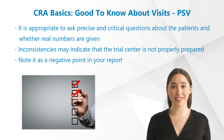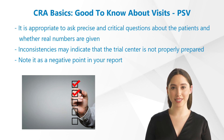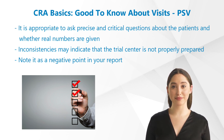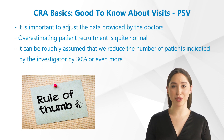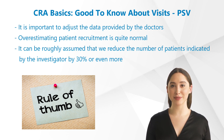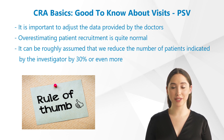If you discover inconsistencies in the statements about the number of patients, this may indicate that the trial center did not properly deal with the questionnaire and the study documents. If this is the case, it is important to adjust the data provided by the doctors, in most cases by a correction factor, because overestimating patient recruitment is quite normal. This correction factor is easily overlooked by sponsors.